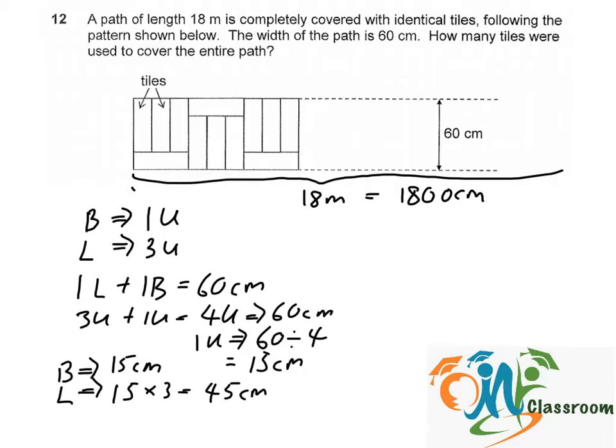How many groups will there be? We just need to take 1800 divided by 45. We will get 40 groups.